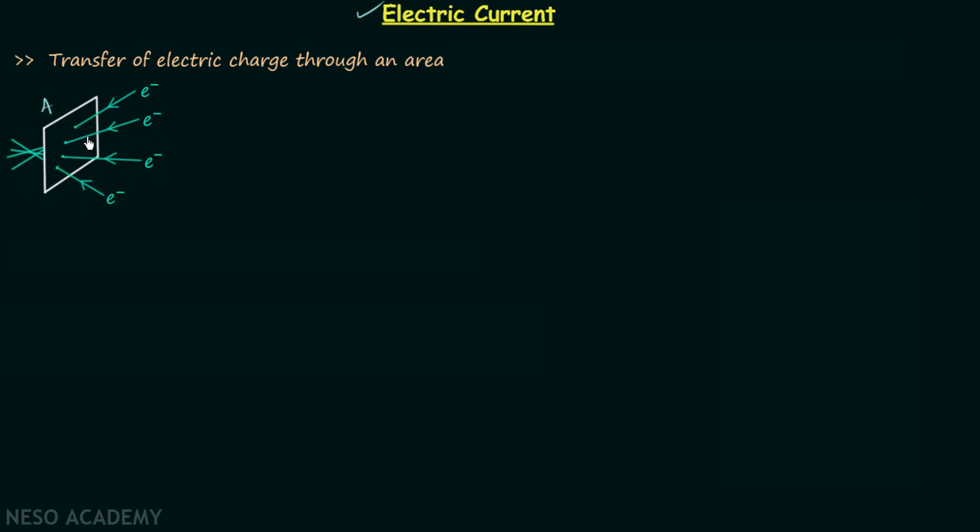In this particular case we have electrons carrying the electric charge. Let's say there are a total of n electrons, therefore ne will be the total charge, and these n electrons are crossing this area in t seconds.